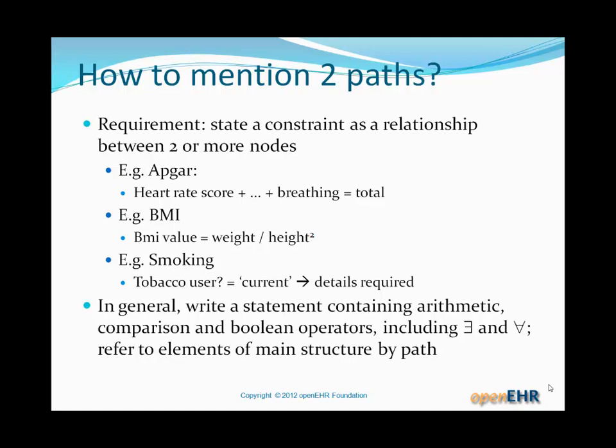What if we wanted to write a constraint that included a relationship between two or more nodes? For example, in the Apgar archetype we'd like to say heart rate score plus muscle tone plus breathing equals total — that's how Apgar works. Similarly, in body mass index we might want to write the formula weight divided by height squared, potentially with a constant depending on units. For smoking, if the data point for tobacco user has as its answer that the person is a current tobacco user, then another part of the archetype that records details is required, but only in that situation — otherwise it's optional.